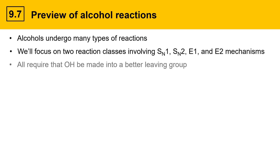All of these reactions require that the OH group be made into a better leaving group. The big problem with OH-containing molecules in substitution and elimination reactions is that OH- is a poor leaving group, and all of the reactions we'll look at in the later part of chapter 9 focus on making that OH group into a better leaving group so that substitution and elimination reactions are possible.